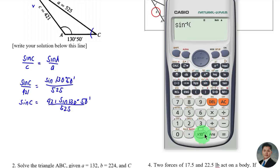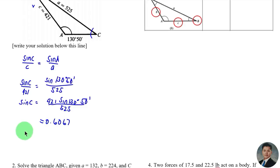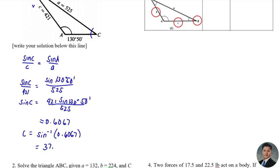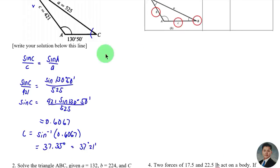From here we can solve for angle C by taking the inverse sine of 0.6067, which gives 37.35 degrees. Converting to degrees and minutes by clicking the format button, the answer is 37 degrees 21 minutes.